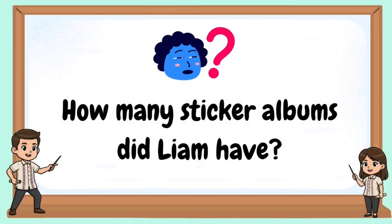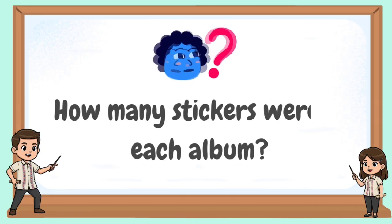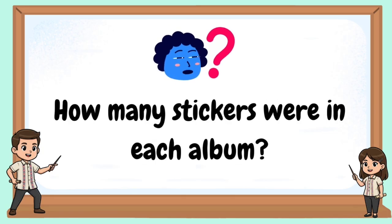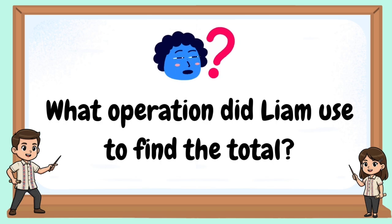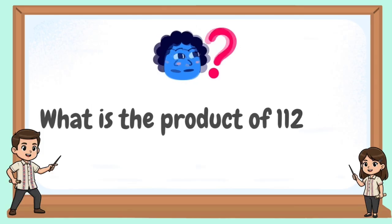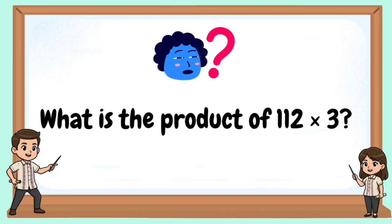How many sticker albums did Liam have? How many stickers were in each album? What operation did Liam use to find the total? What is the product of 112 times 3?